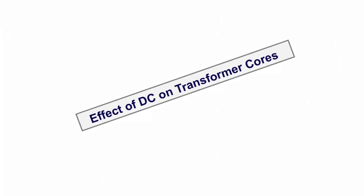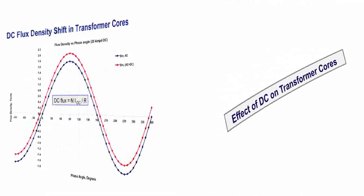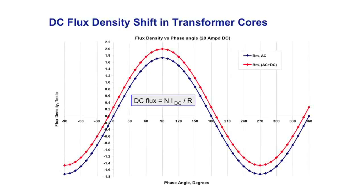To understand the effect of GIC on transformers, I'll explain some basics on the effect of DC on transformer cores. When you have a DC current going into the transformer winding, the number of turns times the current gives ampere-turns; divided by the reluctance of the magnetic circuit, you get a DC flux. That DC flux shifts the AC flux in one direction.